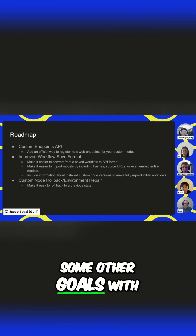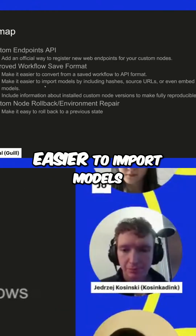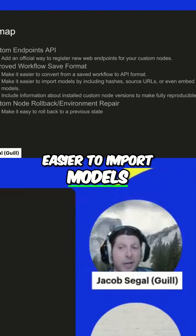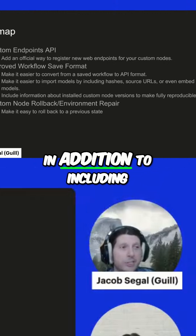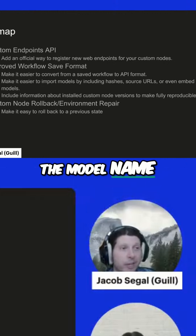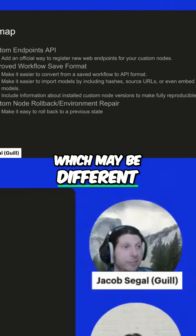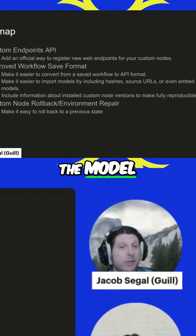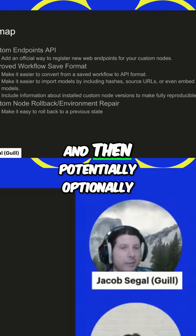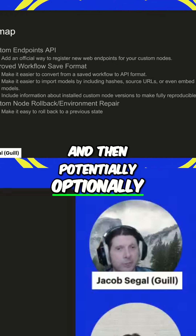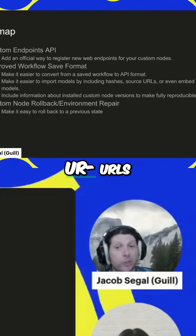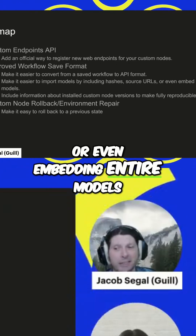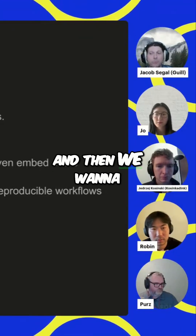Some other goals with the workflow save format are to make it easier to import models by, in addition to including the model name — which may be different for different people who save it — including a hash of the model, and then potentially optionally including source URLs or even embedding entire models within the workflow.